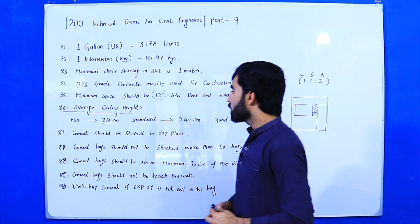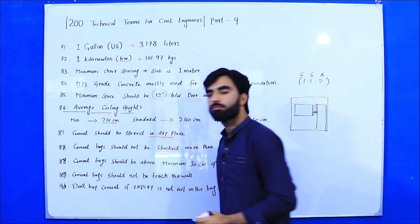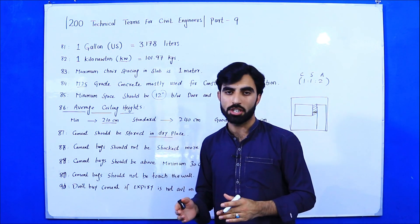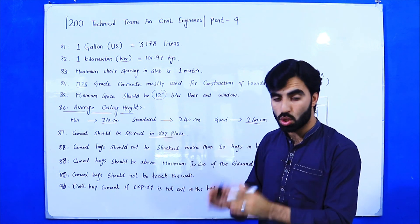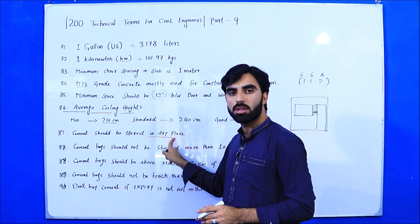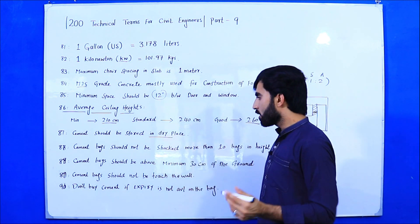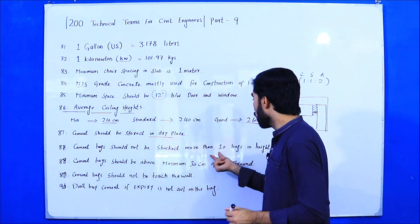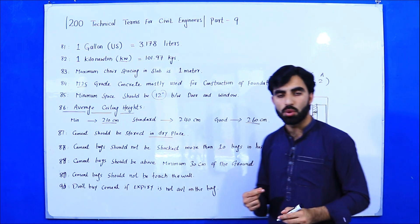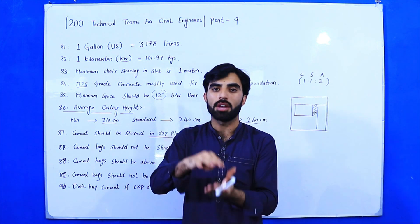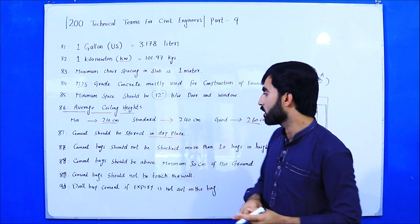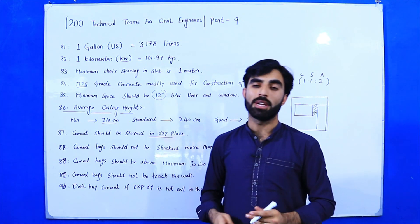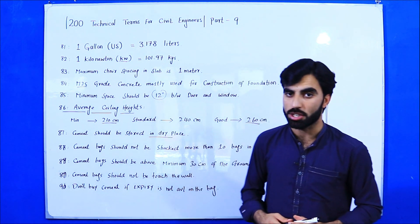Term number 87: Cement should be stored in a dry place. When cement is brought to the construction site, it must be stored in a dry place, not a wet place. Term number 88: Cement bags should not be stacked more than 10 bags in height. If you stack more than 10 bags, the cement at the bottom can convert to solid form and cannot be used in construction.